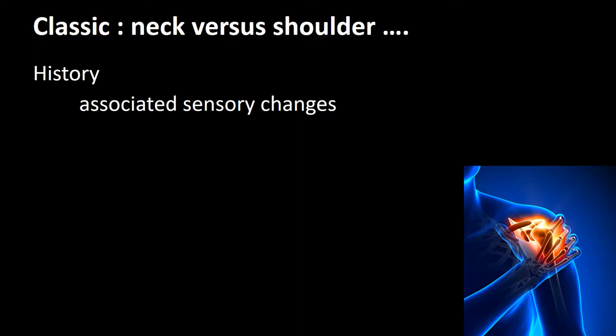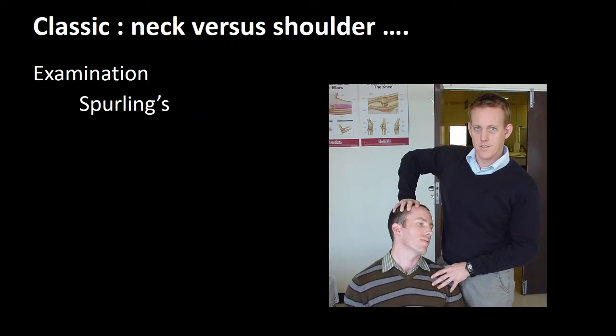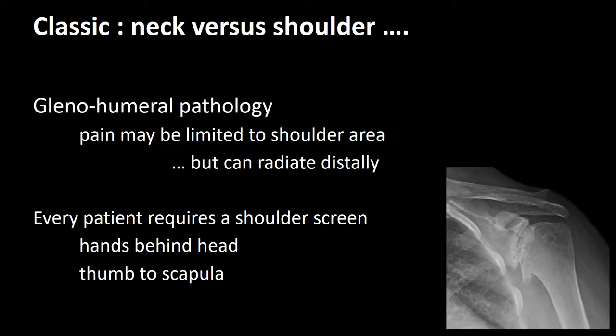One needs to look for associated sensory changes, which will point one towards cervical pathology. On examination, one can perform Spurling's test, as demonstrated in this photograph. The patient's neck is rotated towards the side of the complaint, extended with some downward pressure to recreate the pain experienced down the arm. Glenohumeral pathology may be limited to the shoulder itself but can also radiate down towards the elbow. Every patient presenting with cervical pathology should at least have a shoulder screen, which can be done in seconds by asking the patient to place both hands behind the head and thumbs to the scapula, looking for pain and reduced range of motion.